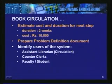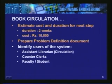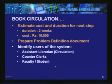We have also noted who are the users of this system. The users of this system are the assistant librarian who is in charge of the circulation function, then there are a set of clerks who function at the counter of the library who issue books and receive books, and then the users of the library who are faculty and students. So we have made note of all these things and now we are ready to prepare the problem definition document.